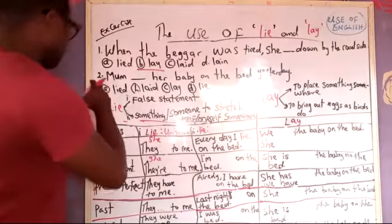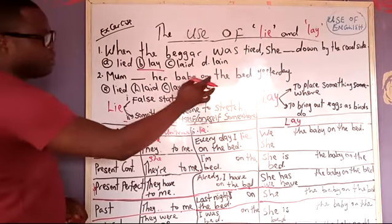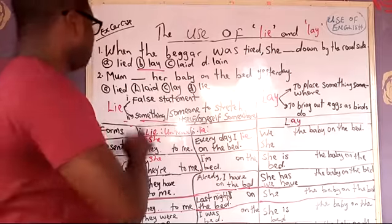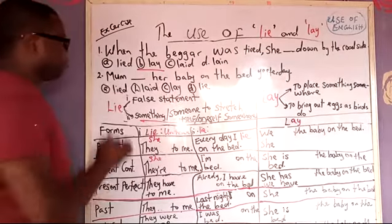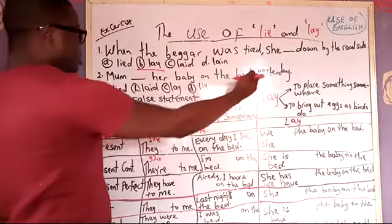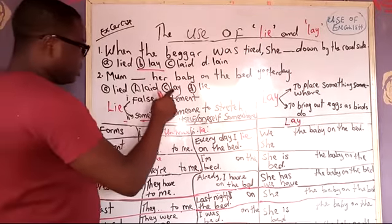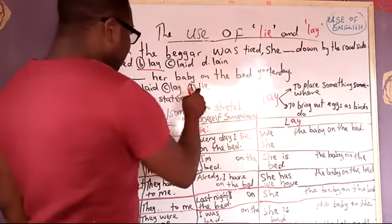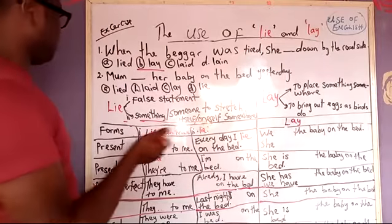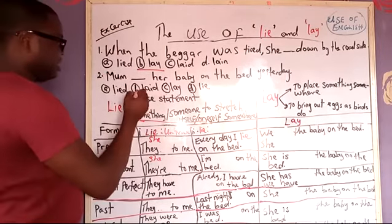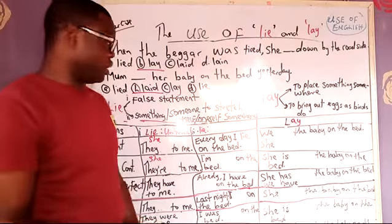Consider question number two. Mom dash her baby on the bed yesterday. The options are: laid, lain, lie, light. Our answer here is laid. Why is it laid? Let's get to know that.